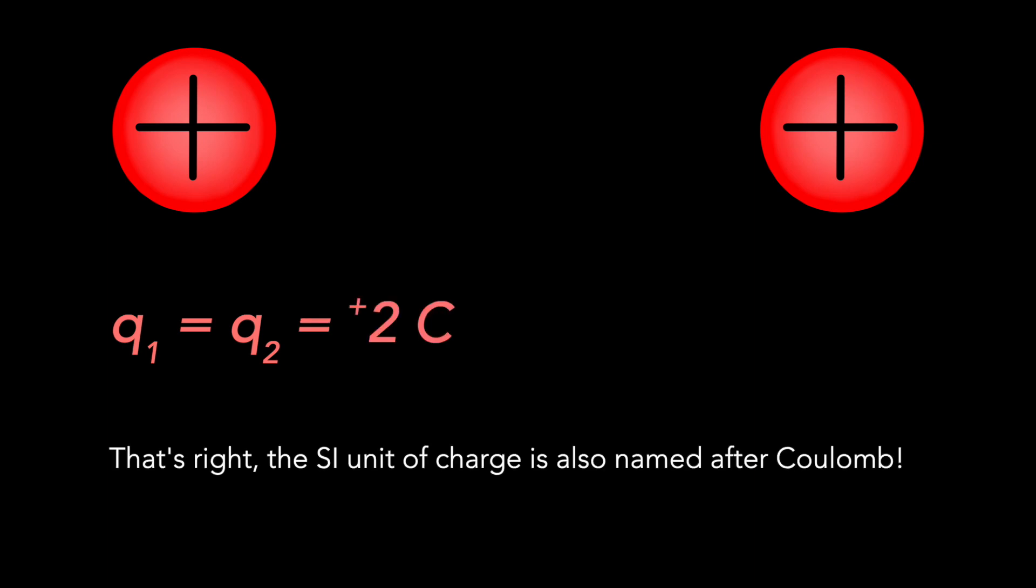In this first example, we have two positively charged particles. They both carry the same amount of charge. Let's say it's two coulombs each. That's actually quite a lot of charge, so the resulting force will be relatively large.